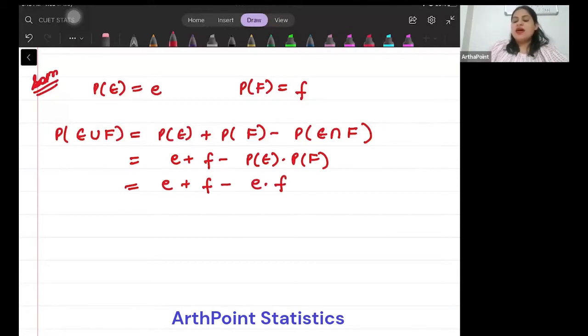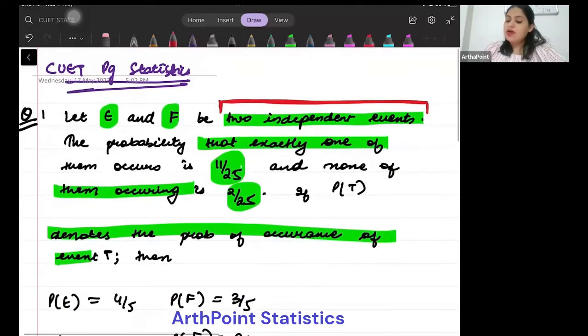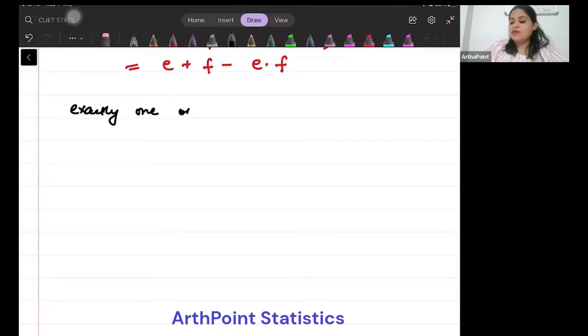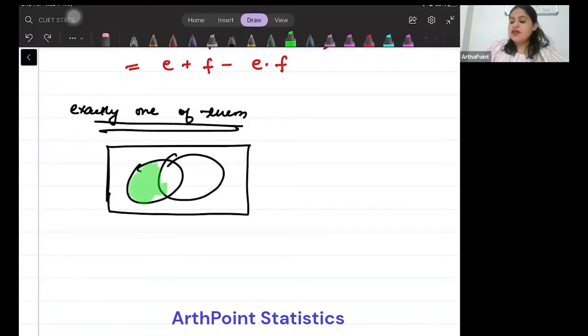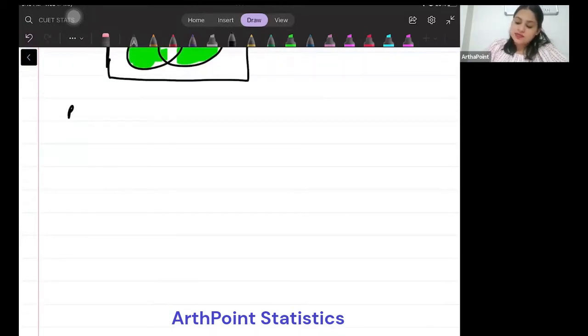This is occurrence of at least one of the events. But the problem says the probability that exactly one of them occurs. So exactly one means union minus intersection. If I remove the common area, then I will get exactly one. Exactly one is written as probability of E union F minus probability of E intersection F.